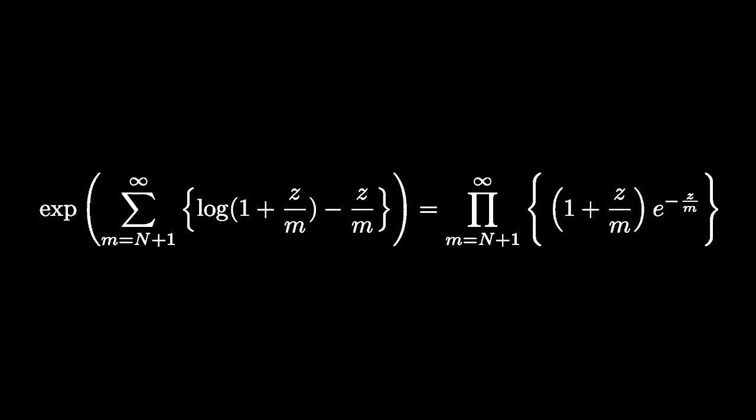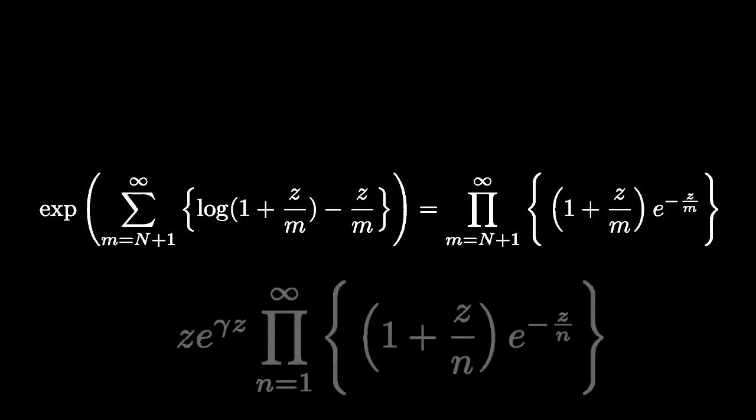Therefore, the Weierstrass canonical form is a complex analytic function whenever the absolute value of Z is less than or equal to N over 2, where N is any natural number. That is to say, the product is complex analytic for all finite values of Z.